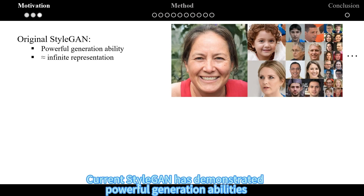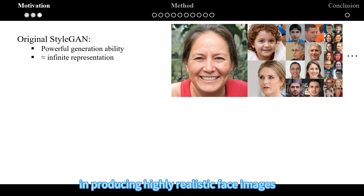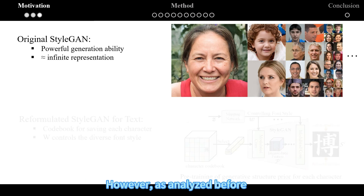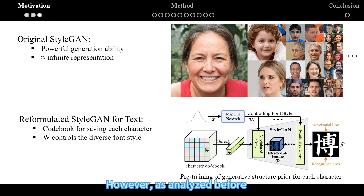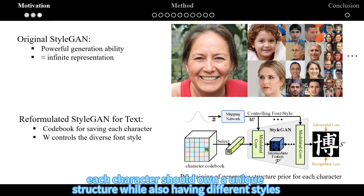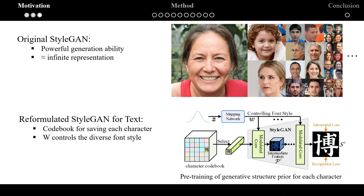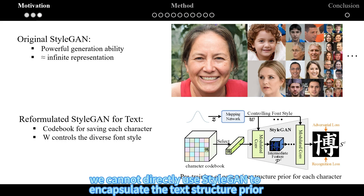Current StyleGAN has demonstrated powerful generation abilities in producing highly realistic face images. Ideally, it can generate infinite representations. However, each character should own a unique structure while also having different styles. Therefore, we can't directly use StyleGAN to encapsulate the text structure prior.